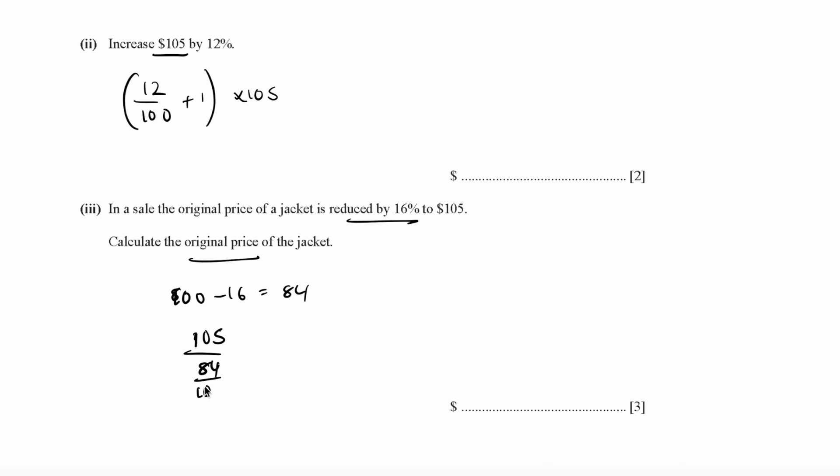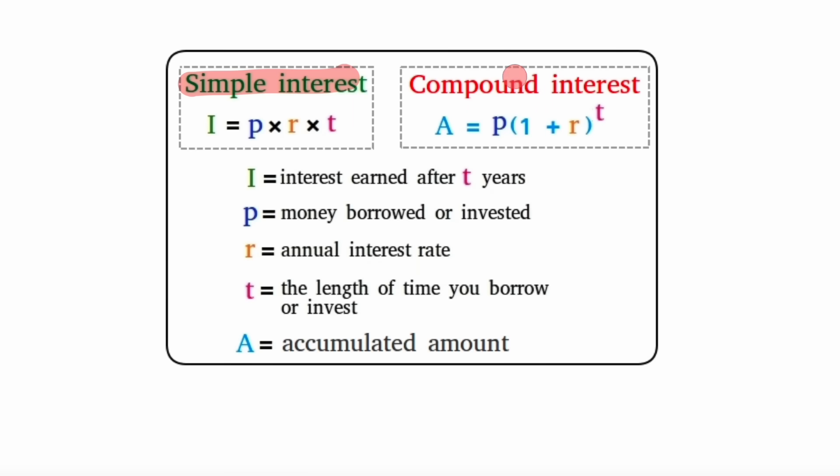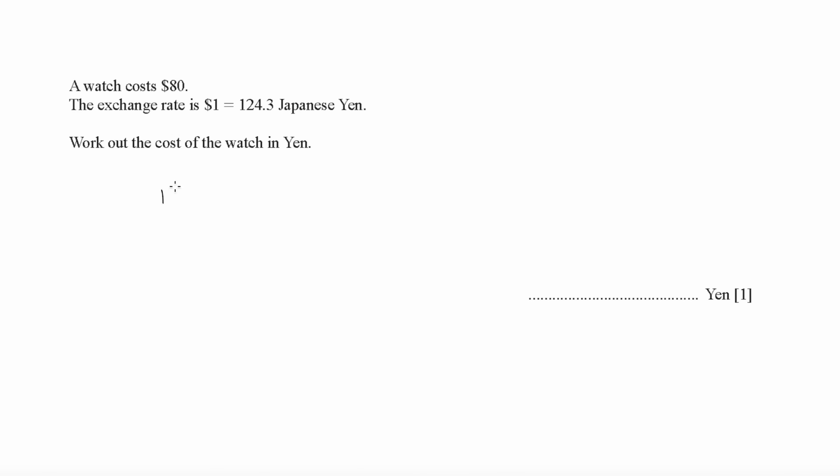For interest and compound interest, here is the formula: I is the interest earned, P is the money borrowed or invested, r is the rate of interest, and t is the time. For compound interest, A is the accumulated amount, this is the invested or borrowed amount, then this is 1 plus r which is the interest rate, and t is the time taken. To answer any questions, you use these formulas.